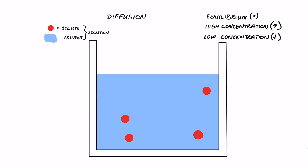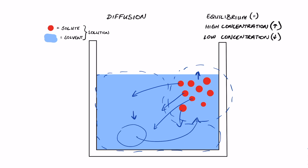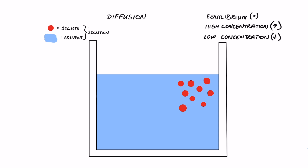Now let's say I've put solute into a small region via a pipette — like a few drops of red food coloring into one area of the container. At that moment, the food coloring is at a high concentration in that spot, while the rest of the water is at a low concentration. The solution will want to reach equilibrium, so we'll get movement of the solute — those red dots — from the high concentration to the low concentration, spreading itself out.